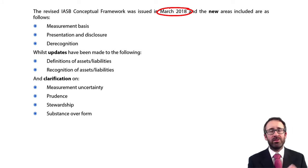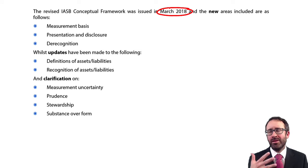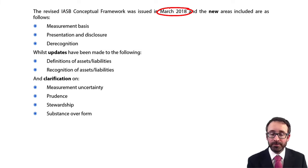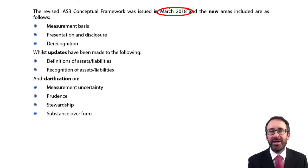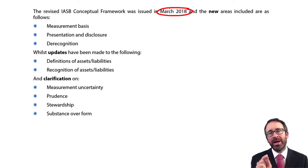We always used to have a section on recognition, but now there is also a section on de-recognition. There wasn't anything categorical on de-recognition before, even though it is discussed within property, plant and equipment — when we dispose of an item of PPE — and within financial instruments, when we repay a loan. Updates have also been made, very subtly, to some definitions of assets and liabilities, and likewise the recognition criteria for assets and liabilities have been slightly updated.